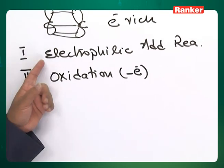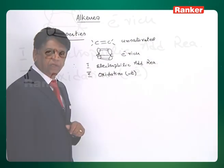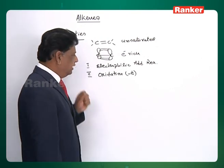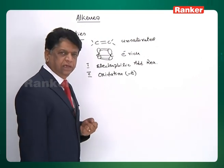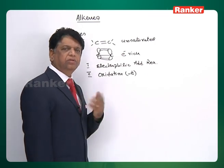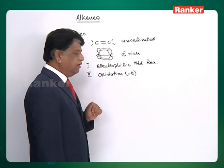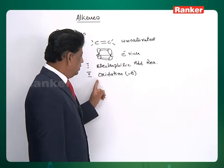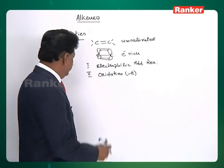Once again, the alkenes are rich with electrons. Therefore, metals like manganese (+7), if added, take electrons and the alkene undergoes oxidation while metal ions undergo reduction. So alkenes are very much susceptible to de-electronation. That's why they undergo several types of oxidation.